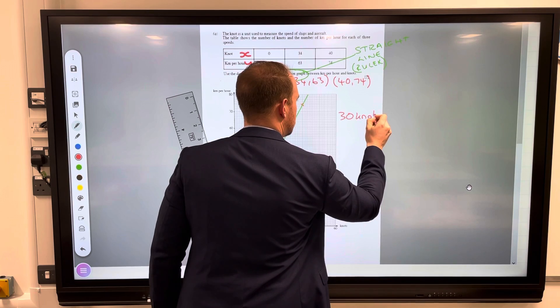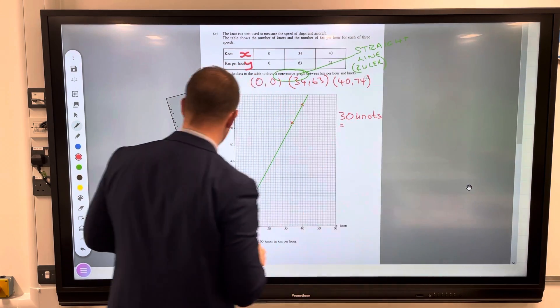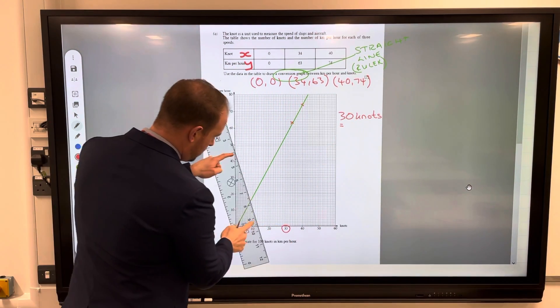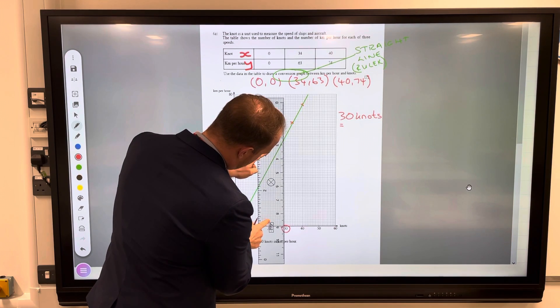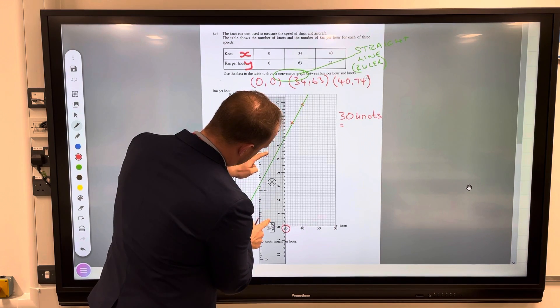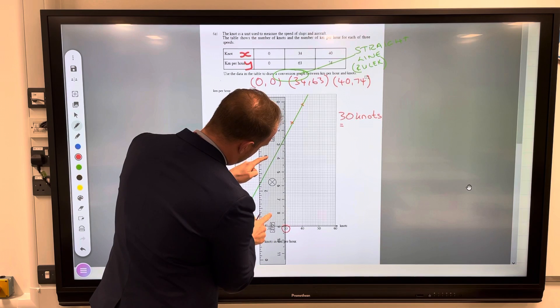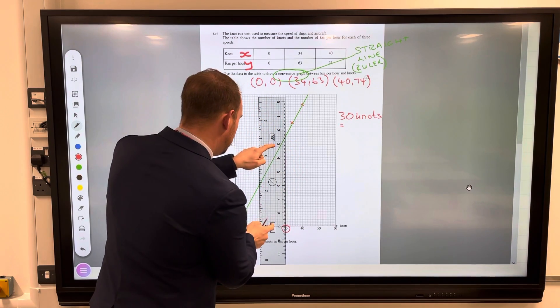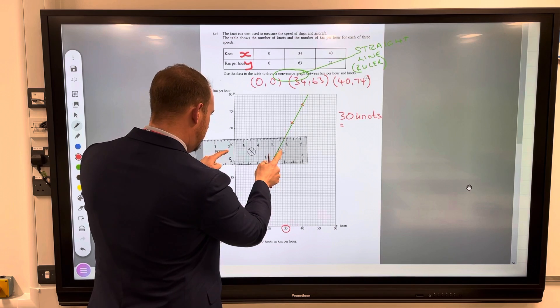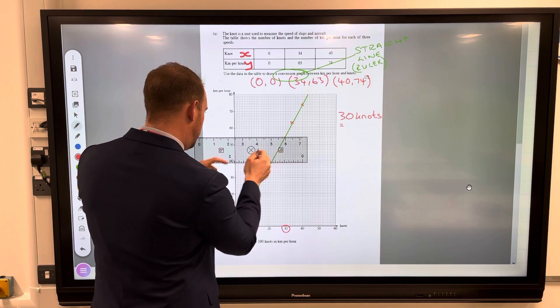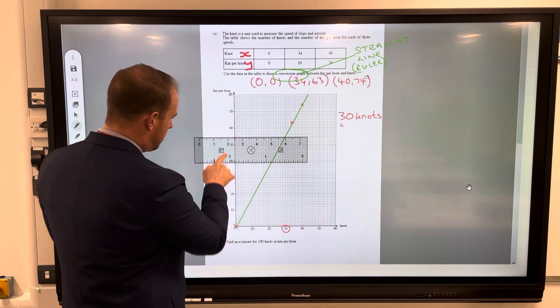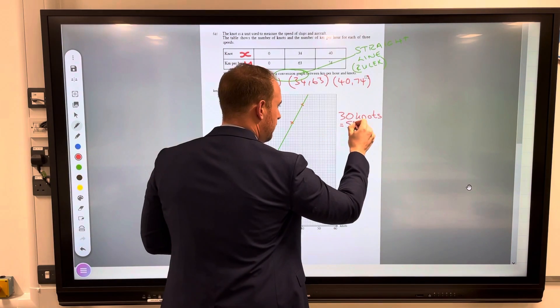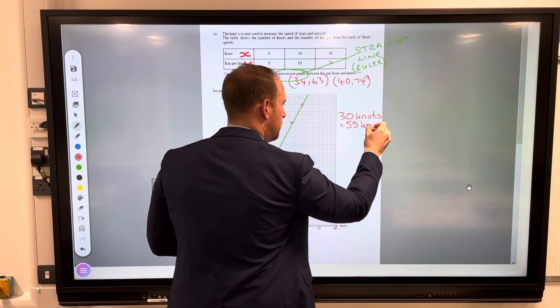30 knots into kilometers, so 30 there. I'm going to use that line, use my ruler as well to go all the way up to that point there.